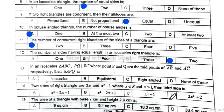Number 13: In an isosceles triangle ABC, PQ is parallel to BC where point P and Q are the midpoints of AB and AC respectively. Then triangle APQ is an isosceles triangle. Option A is correct.